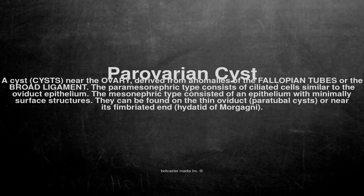The paramesonephric type consists of ciliated cells similar to the oviduct epithelium. The mesonephric type consists of an epithelium with minimally surface structures.